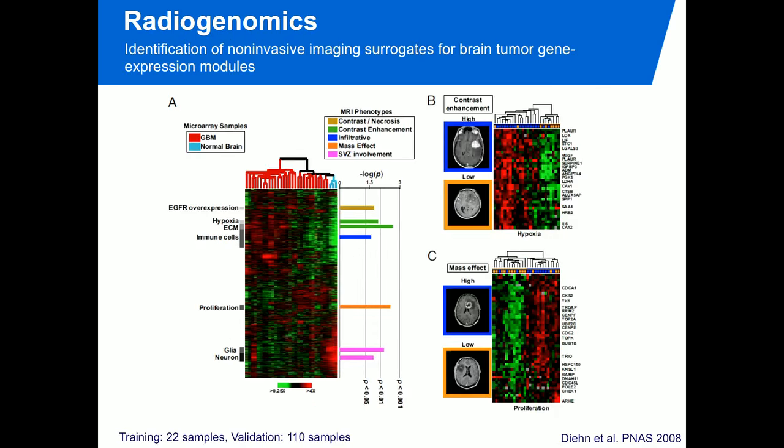From the same group, a study was published in PNAS in 2008 with brain cancer — glioblastomas. They looked at different phenotypic traits quantified by radiologists, like contrast enhancement and mass effects, and linked this back to different gene expression patterns. They found significant correlations with gene sets like EGFR overexpression, hypoxia, and proliferation — all very important in tumor development and therapy resistance. This dataset had 22 for training but 110 for validation, so the statistics were better.